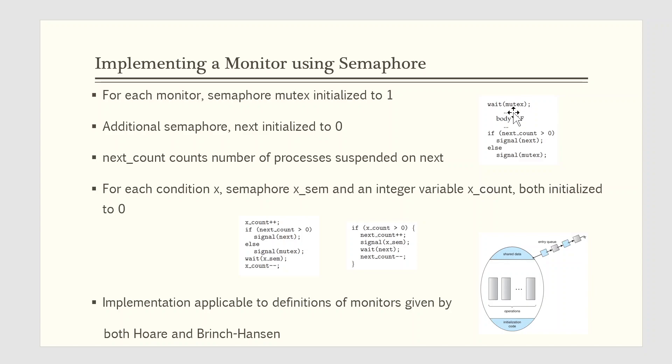We can now describe how condition variables are implemented as well. For each condition x, we introduce a semaphore x_sem and an integer variable x_count, both initialized to 0. The operation x.wait can now be implemented as: x_count is incremented by 1 and next_count is checked. If it's greater than 0 then signal operation is done on next else signal operation is done on mutex. Then wait operation is called on x_sem, the semaphore for this particular condition, and x_count is decremented by 1.